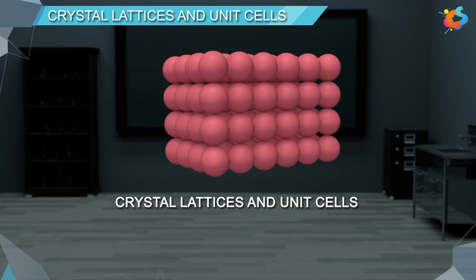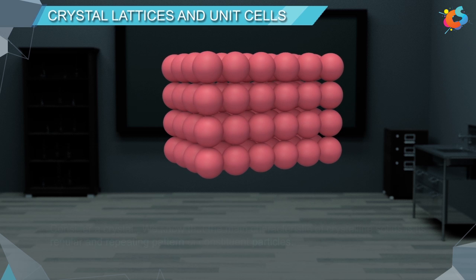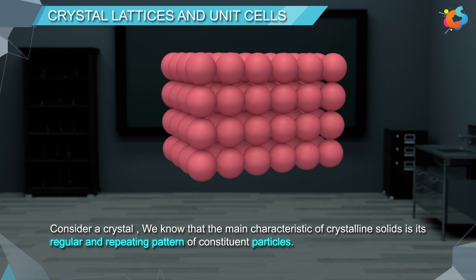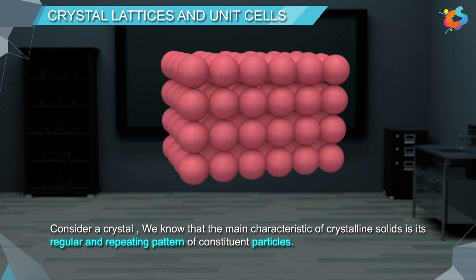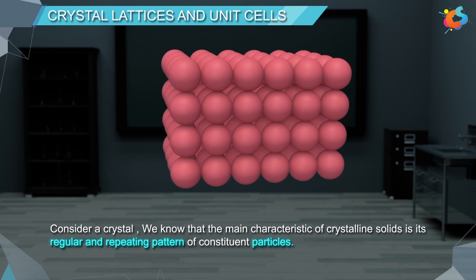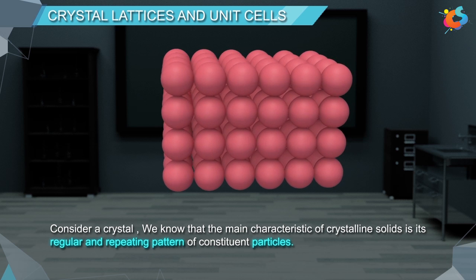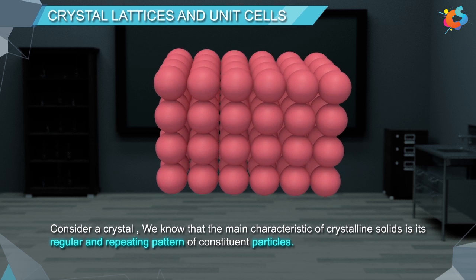Crystal Lattices and Unit Cells. Consider a crystal. We know that the main characteristic of crystalline solids is its regular and repeating pattern of constituent particles.